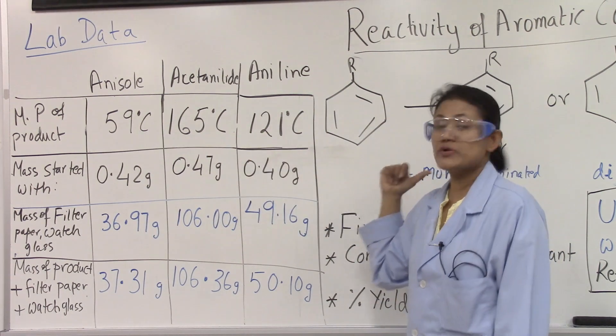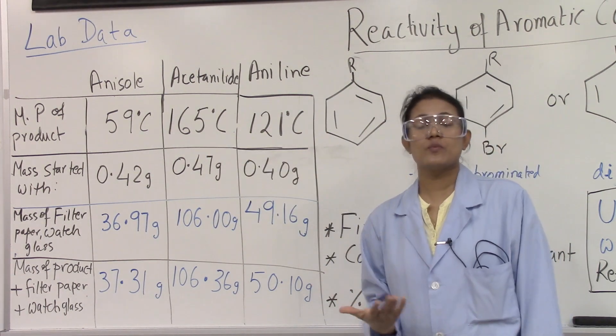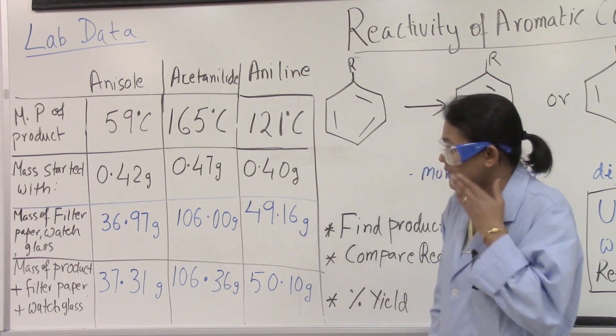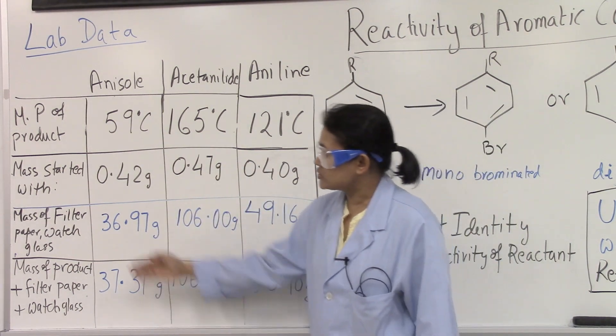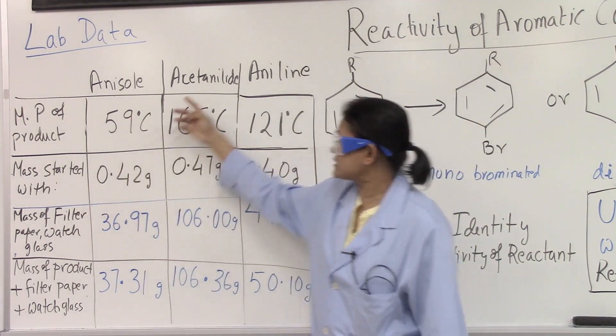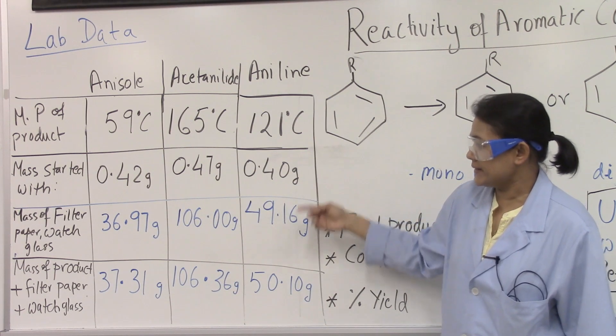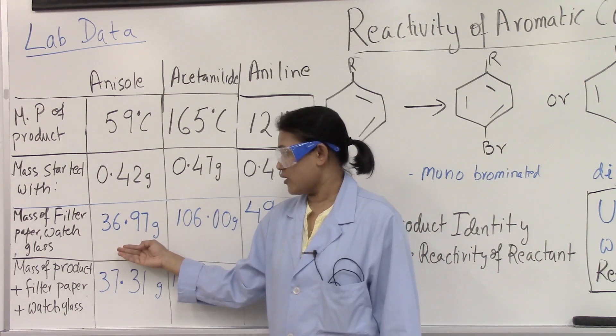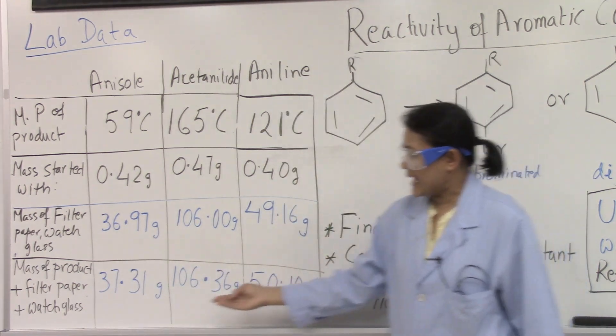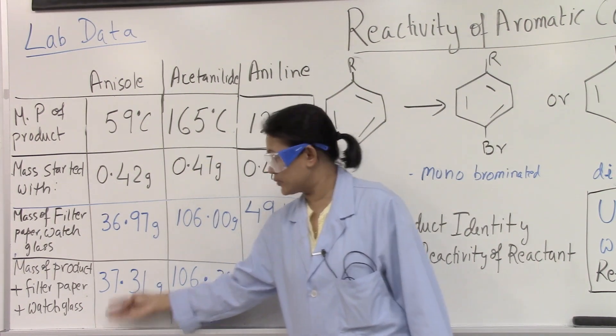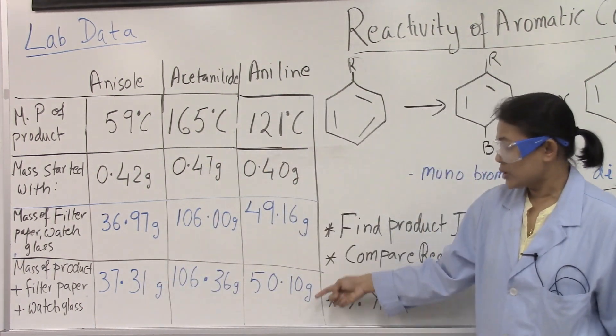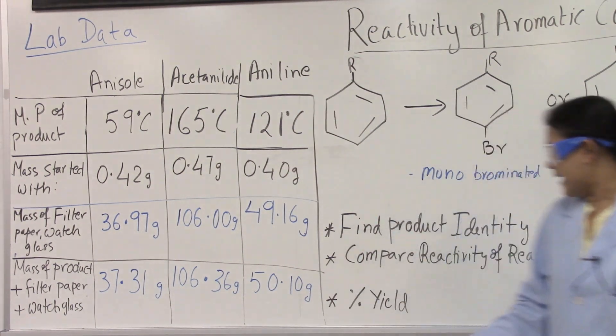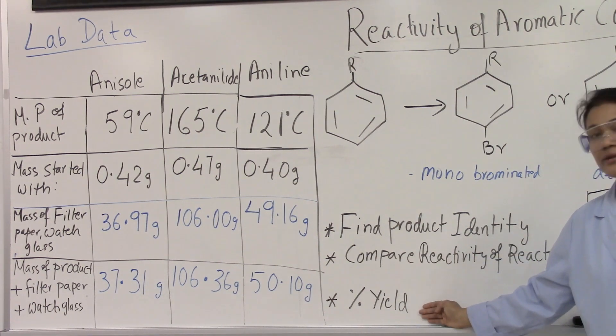Which of these form which product? Is it a monobrominated product? Is it a dibrominated product? Or a tribrominated product? And for the percent yield, this is all in grams. This is the mass we started with for anisole, acetanilide and aniline. That's the mass of filter paper plus watch glass, which is the empty mass of watch glass and filter paper. And this is after the dried product. So the difference of these two numbers would give you the mass of the product in each case for anisole, acetanilide and aniline. And that should help you find percent yield.